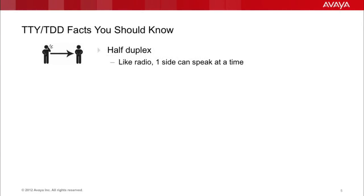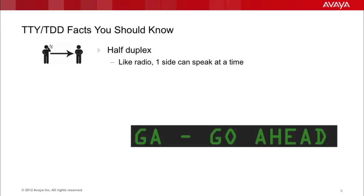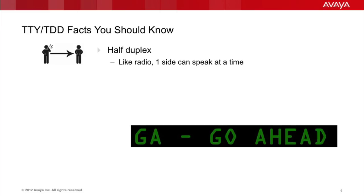Here are some TTY-TDD facts that you should know. First of all, the communications path is half-duplex. Like a two-way radio, only one side can speak at a time. Because of this, when you're done typing, you typically enter the letters GA for go-ahead. This lets the other side know that you're done and they can now start.